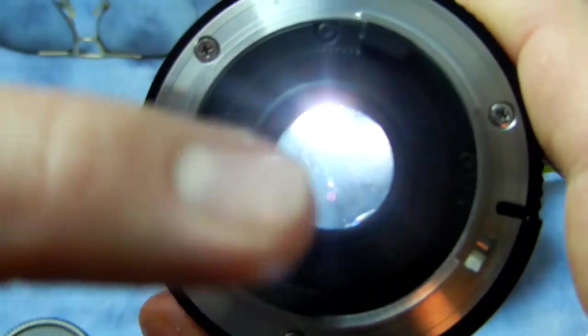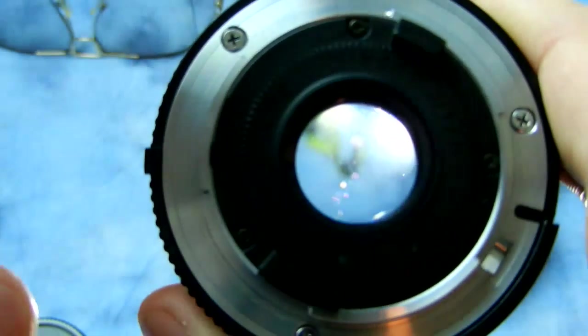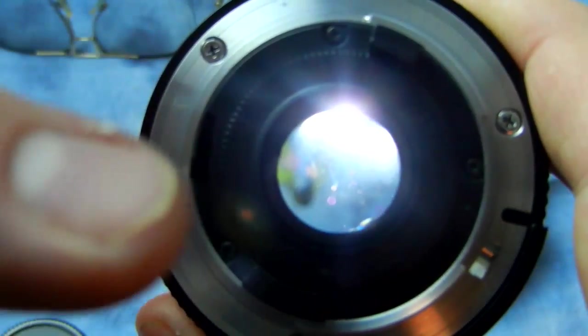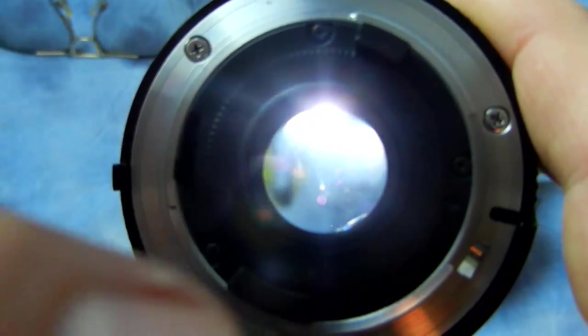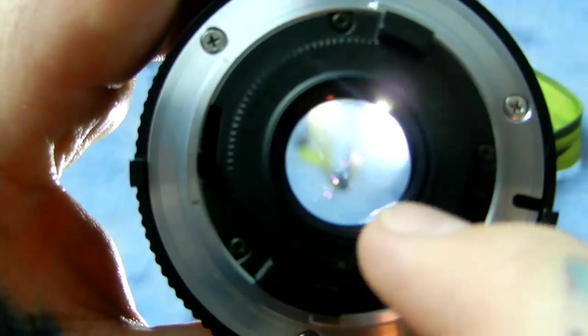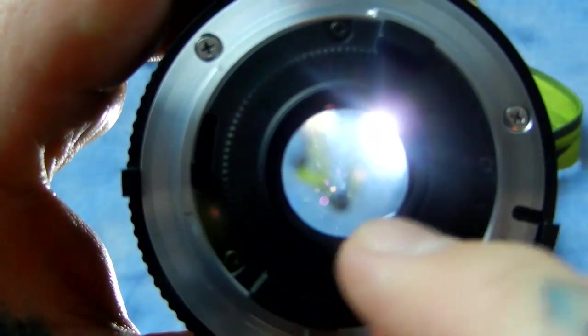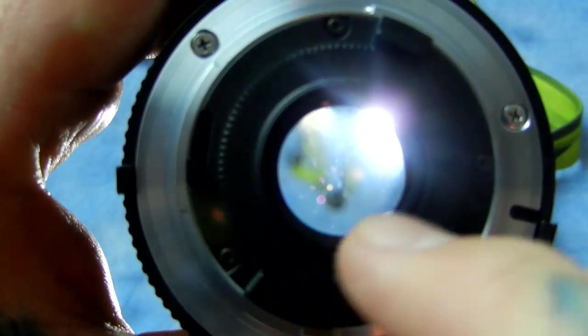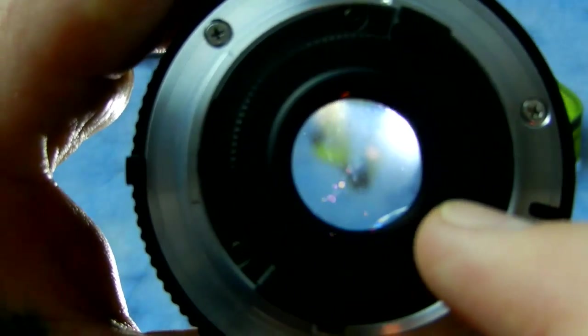Now you see this what looks like haze—you think well that's oily haze, it's not. And how do you know it's not oily haze? Because balsam separation, you see the one here, it'll look like a crack in the glass but it's not a crack, it's balsam separation.